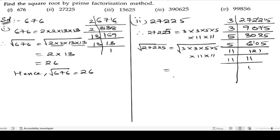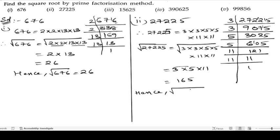The numbers which are doubled we will take as single. So it becomes 3 into 5 into 11. Let us multiply: 3 fives are 15, and 15 into 11 is 165. Hence, the square root of 27225 is 165.